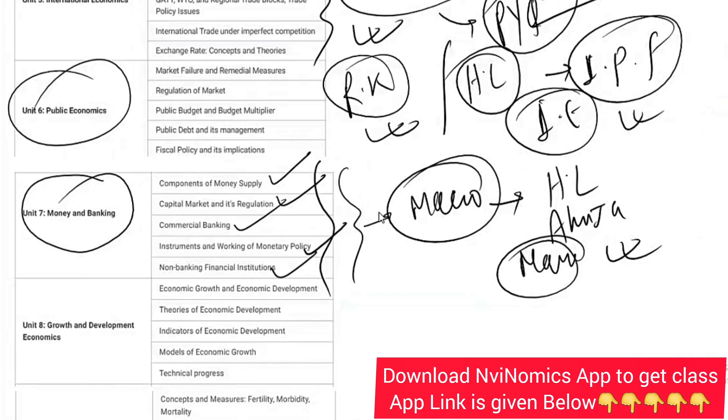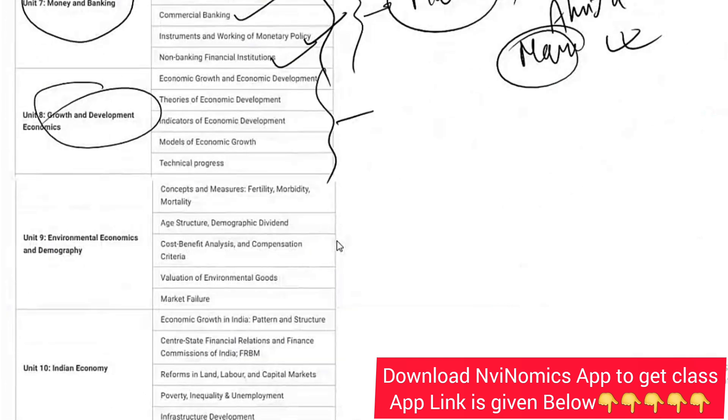For growth and development, which is very important, you can refer only one book - I will suggest you can refer two books also if you have time. One is A.P. Thirlwall, another is M.L. Jhingan.